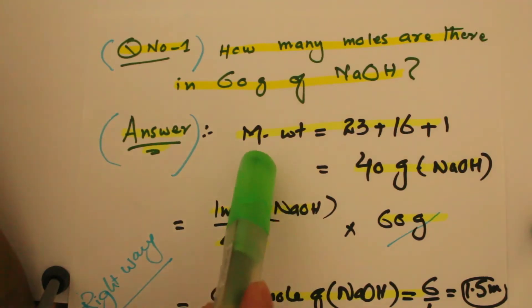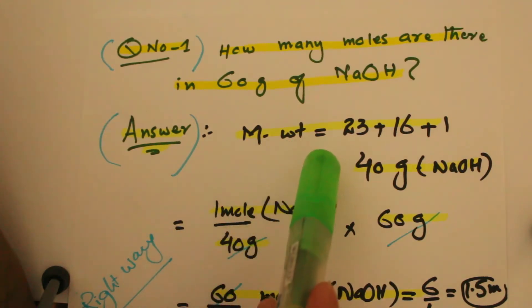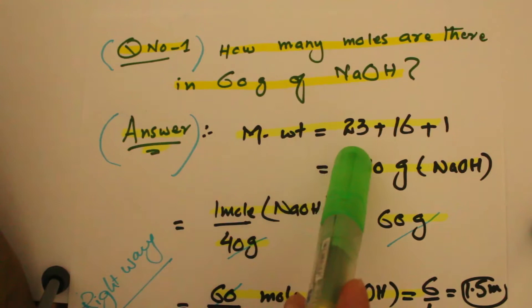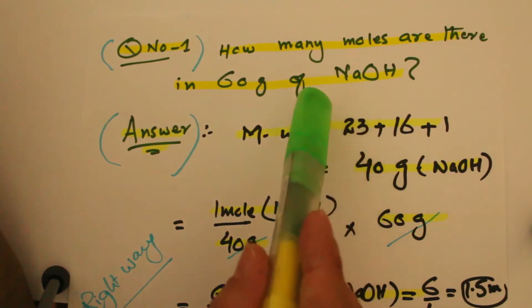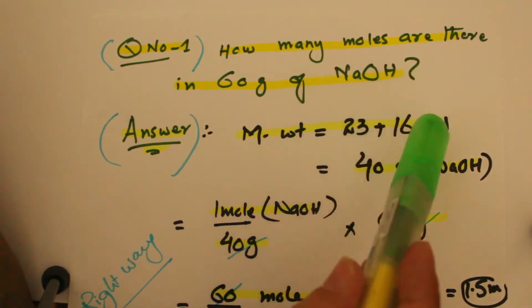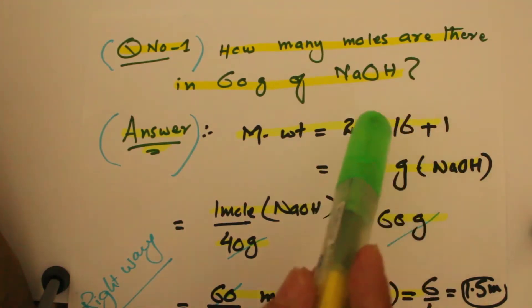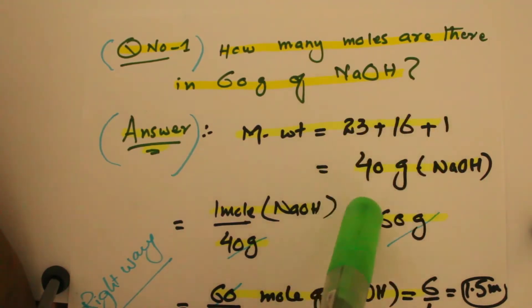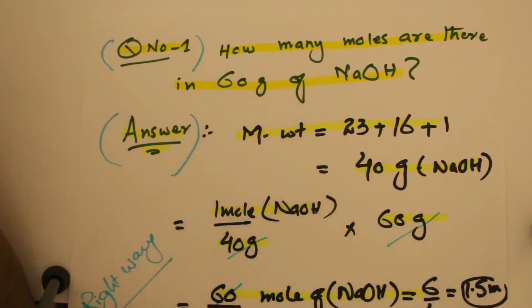The molecular weight of sodium hydroxide is equal to 23, which is the atomic mass of sodium, plus 16 for oxygen, plus 1 for hydrogen. When we add up these values we get 40 grams. So I know that 40 grams of sodium hydroxide is equal to one mole.